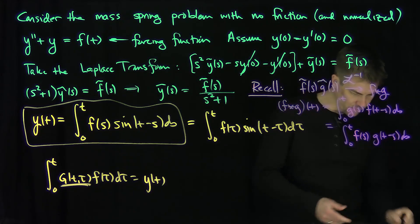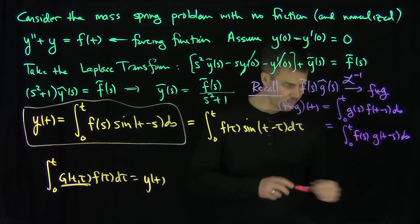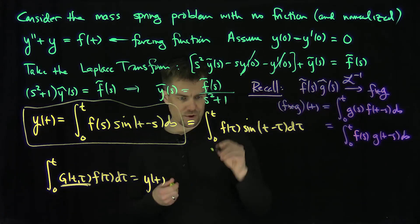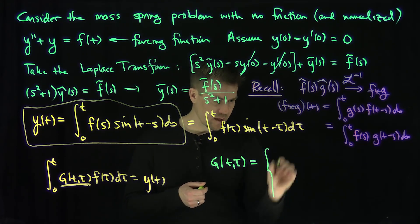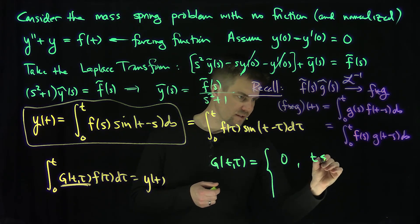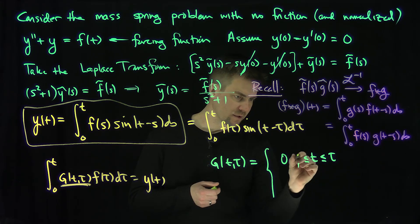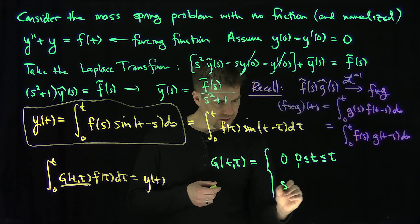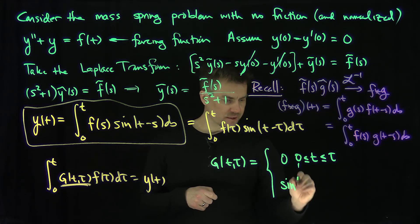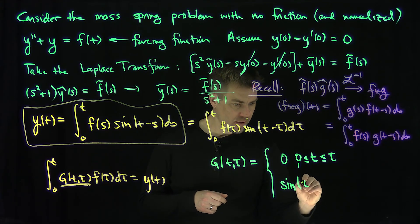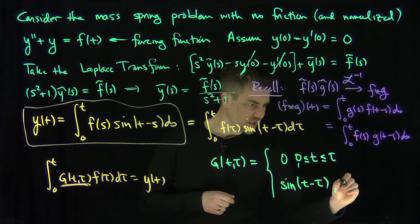And so now I can define our Green's function for this problem for the harmonic oscillator with no friction, and what will that be? That's just going to be g of t and tau. It's going to be 0 if t is less than or equal to tau, and bigger than or equal to 0, of course, right? And then it's going to be the sine of t minus tau, for t bigger than tau.